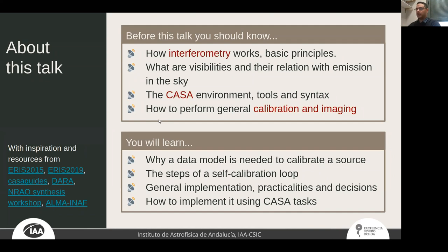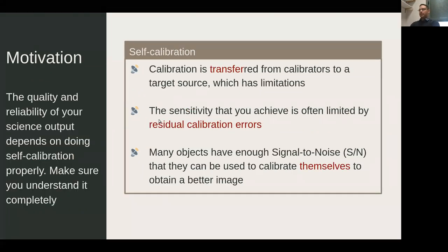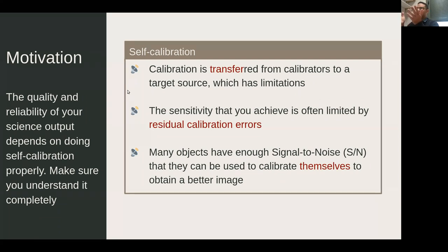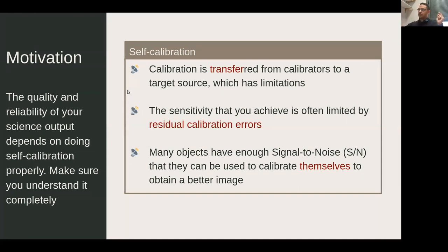The motivation is that when you are doing phase referencing — using an external calibrator to calibrate your target — the quality of the image is not ideal, because there are residual errors. You are transferring solutions that are not exactly correcting the same thing in your target as in your calibrator, and those residuals can only be corrected with actual data observed together with your target.